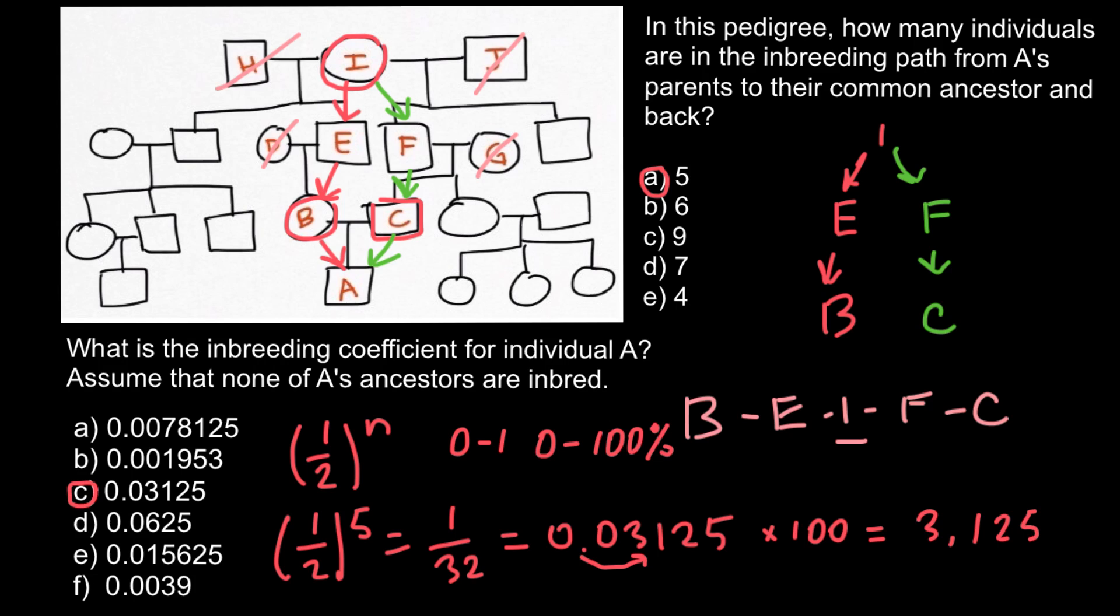Also, as I said, this formula is simplified. It doesn't take into account that some of these people may be inbred. Because today we have a very simple example, this formula also doesn't take into account that we may have alternative routes here.